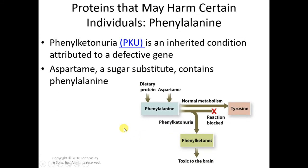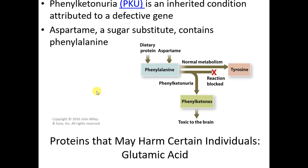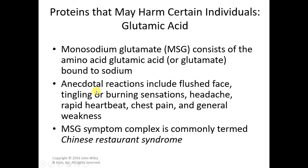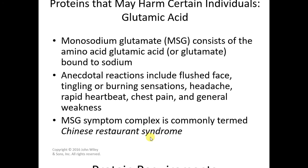There are a couple of other conditions where people are harmed by certain amino acids. Phenylketonuria is an inherited disease in which phenylalanine is the amino acid that causes a problem — there's a link if you want to learn more. There are also individuals who report anecdotal reactions to monosodium glutamate, sometimes called MSG symptom complex or Chinese restaurant syndrome.